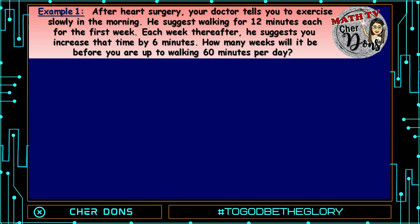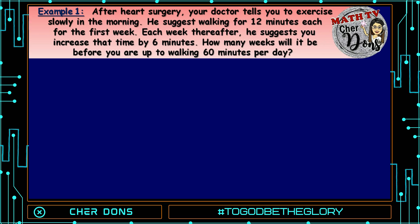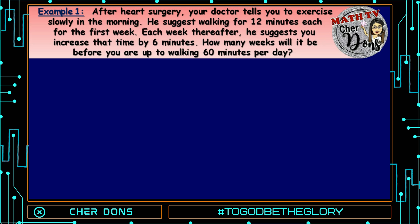Example number one: after heart surgery, your doctor tells you to exercise slowly in the morning. He suggests walking for 12 minutes each for the first week. Each week thereafter, he suggests you increase the time by 6 minutes. How many weeks will it be before you are up to walking 60 minutes per day? This is an arithmetic sequence.